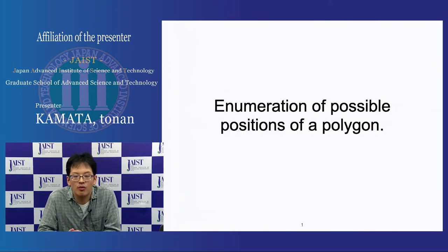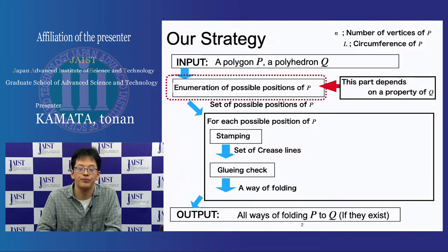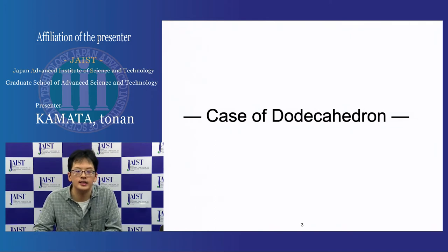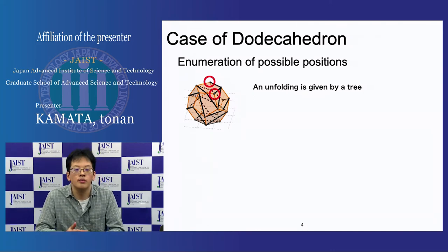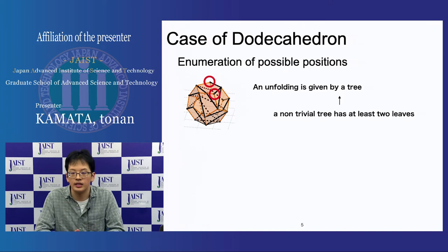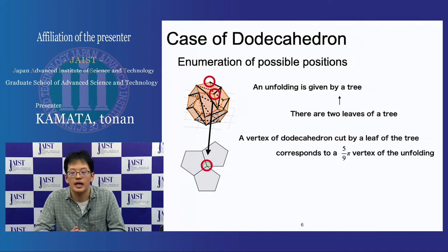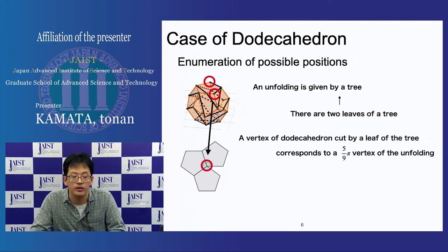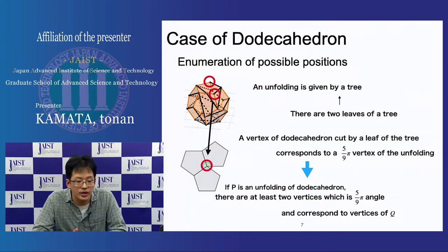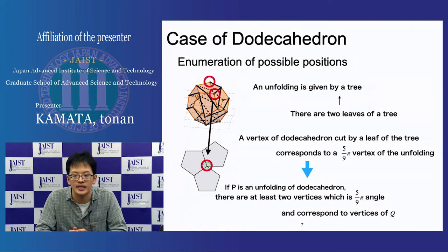The next topic is the enumeration of possible positions of the polygon, which depends on a property of the polyhedron. First case is the dodecahedron. An unfolding of a polyhedron is given by a tree. A non-trivial tree has at least two leaves. A vertex of the dodecahedron cut by a leaf of the tree corresponds to a 5π/9 angle vertex of the unfolding. For the dodecahedron, there are at least two vertices with a 5π/9 angle that correspond to vertices of the polyhedron.